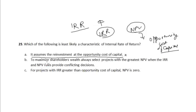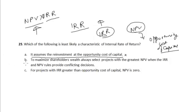Now, Option B: to maximize shareholders' wealth, always select projects with the greatest NPV when IRR and NPV rules provide conflicting results. This statement is correct, because in the case of mutually exclusive projects where we must select only one project and the NPV and IRR methods give conflicting results, one should always go with the project providing the highest NPV to maximize shareholders' wealth.